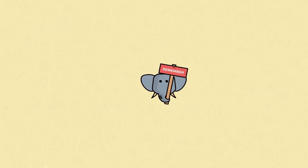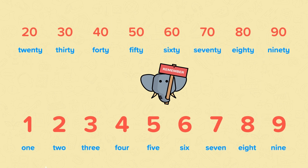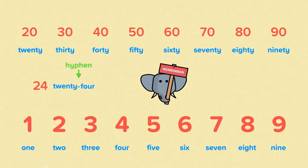So remember, to write the numbers up to 100, you need to be able to write the multiples of 10 and the numbers 1 to 9. When you're joining two parts of a number together, don't forget the hyphen.